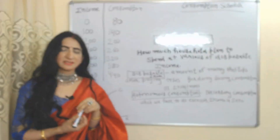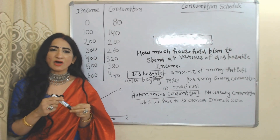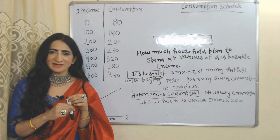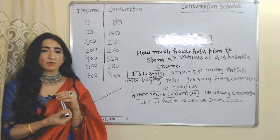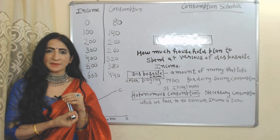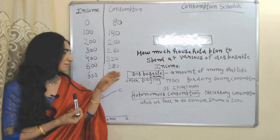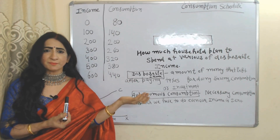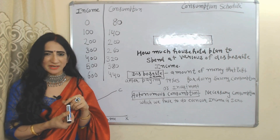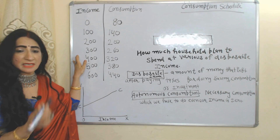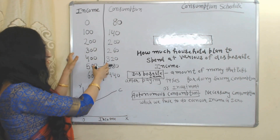Now we will see the consumption schedule. The consumption schedule shows how much households plan to spend at various levels of disposable income. Disposable income means the amount of money that remains after paying taxes, available for consumption, saving, or investment. In the first column we have income or disposable income, and in the second column we have consumption.